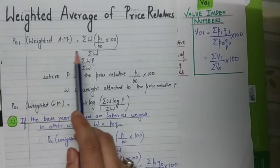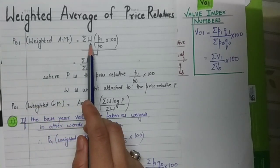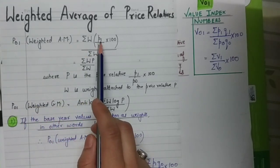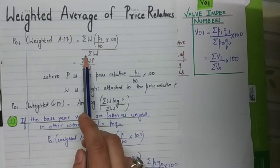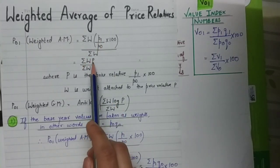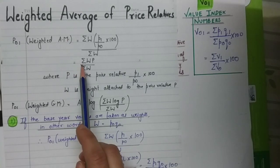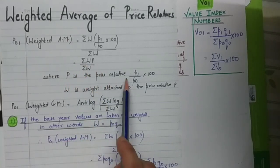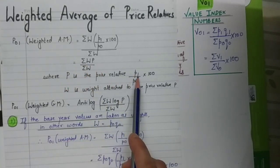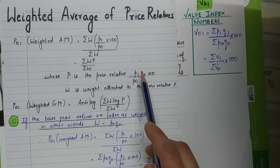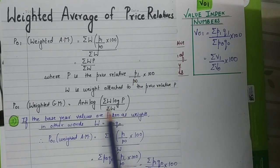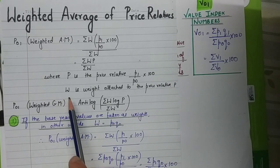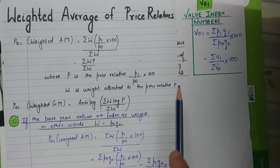In the case of the arithmetic mean, the formula is sigma(W × P) divided by sigma(W), where capital P stands for the price relative, that is P1 divided by P0 into 100 — the price of the current year divided by the price of the base year, multiplied by 100. And W is the weight attached to the price relative.